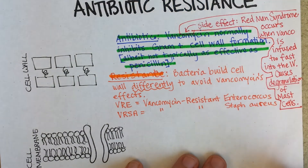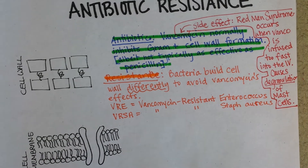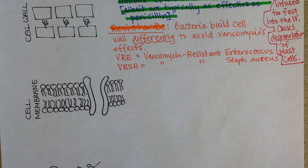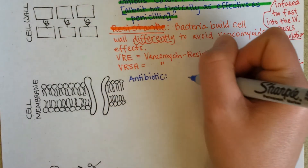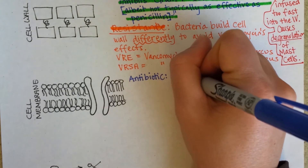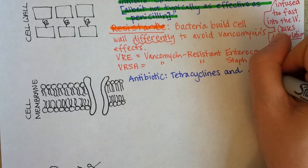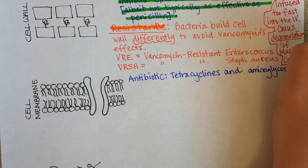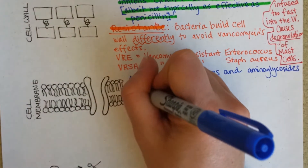So in other words, if you can use penicillin, use it. Now let's look at another example: tetracyclines and aminoglycosides. We'll use blue for this. I'm going to talk about something that could happen in the cell membrane as a way to accomplish antibiotic resistance. The normal job of tetracyclines and aminoglycosides is to inhibit protein synthesis.